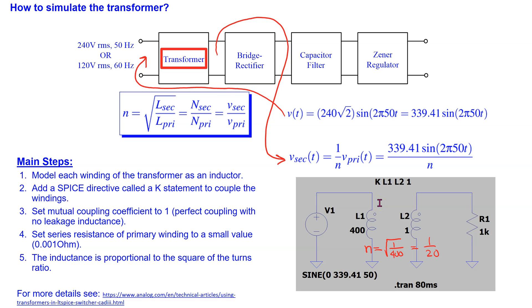Since this SPICE directive is a K statement, it starts with the letter K. L1 and L2 are the primary and the secondary inductors. The last parameter here is the mutual coupling coefficient, which we set to 1 to simulate perfect coupling with no leakage inductance.